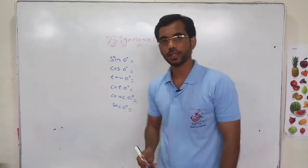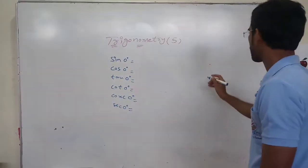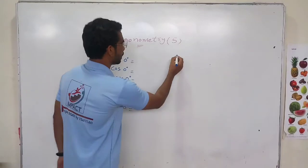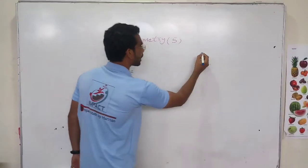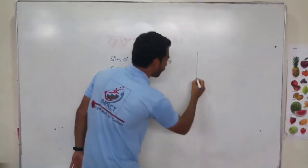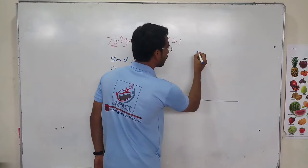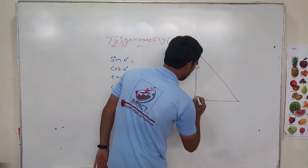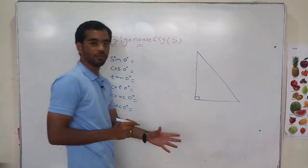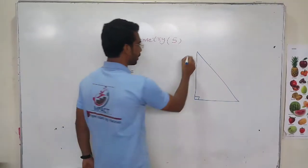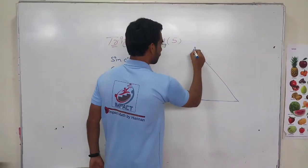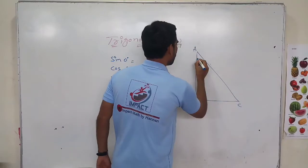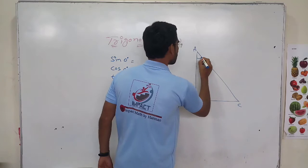For this, we need to take one right angle triangle. What is a right angle triangle? One angle should be 90 degrees. This is a right angle triangle and we will name it ABC.